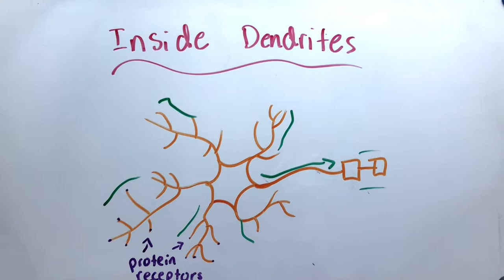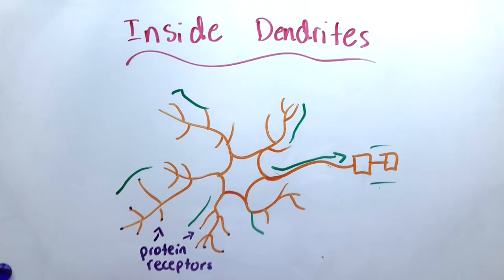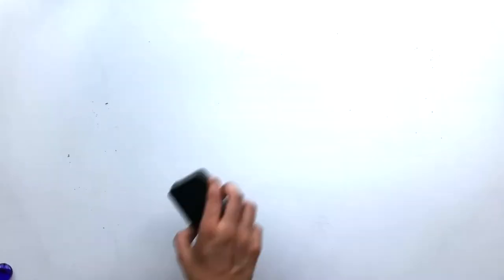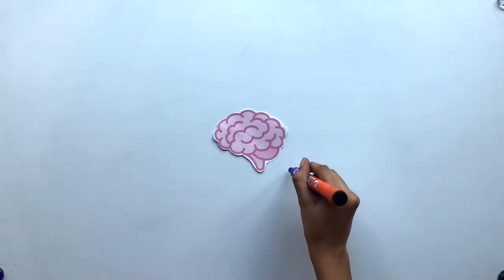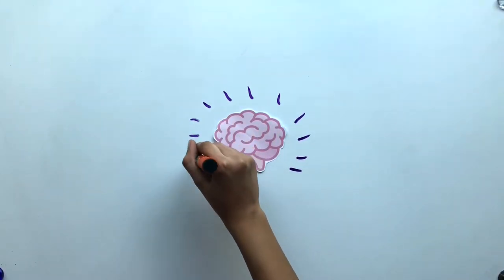Synaptic transmission is one of the primary ways neurons communicate with each other, which allows our brains and body to interact in fascinating ways, which we will learn more about next week.